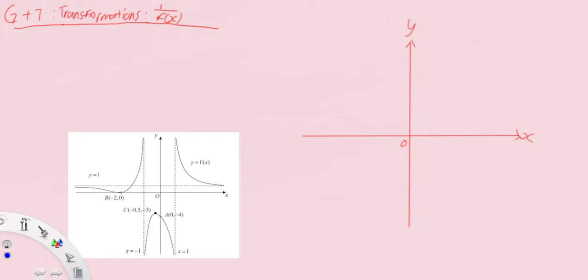Hey everyone, this is another example of our reciprocal graphs where we have the original graph right here, y equals f(x), and you want to sketch the graph of 1 over f(x).